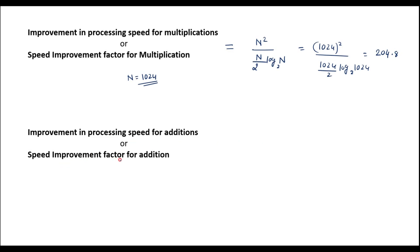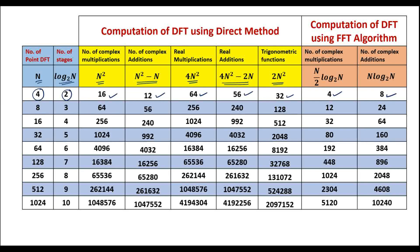Similarly, the speed improvement factor for addition. The formula is: number of complex additions in the direct method divided by number of complex additions in the FFT algorithm, that is N squared minus N divided by N log N to the base 2.